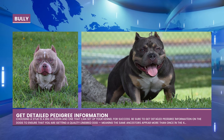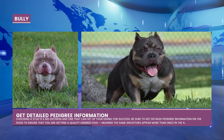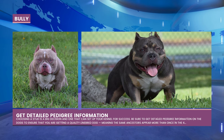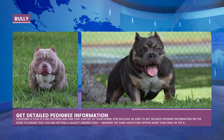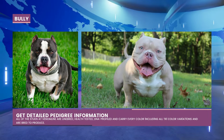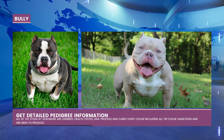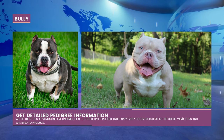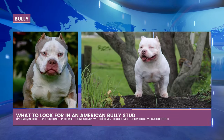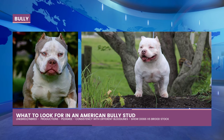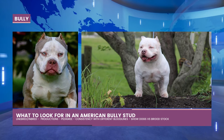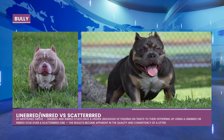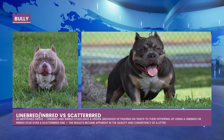Selecting a stud is a significant choice that can help your kennel succeed. To ensure you are getting a high-quality line-bred dog — meaning the same ancestors appear more than once in the four-generation pedigree — obtain detailed pedigree information. Litters from line-bred or inbred studs are more reliable than those from scatterbred studs. Kennels with a reputation for producing high-quality puppies are aware of this and will typically line breed. Every reputable stud should be DNA profiled, health tested, and bred to produce consistent results.